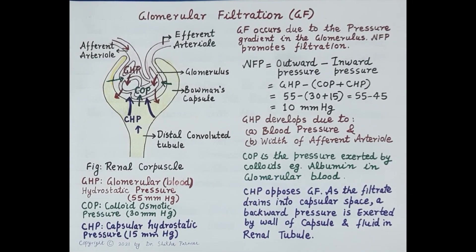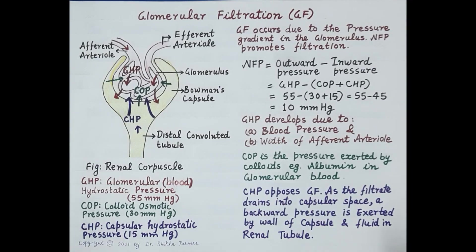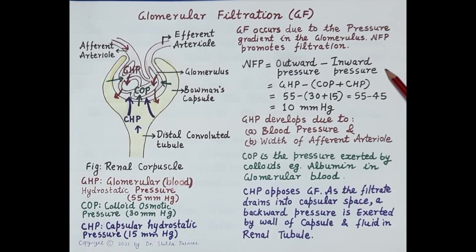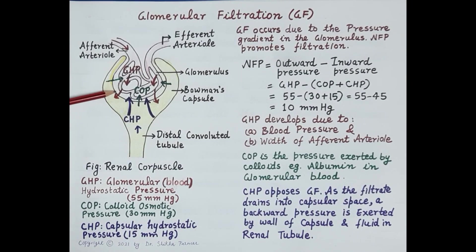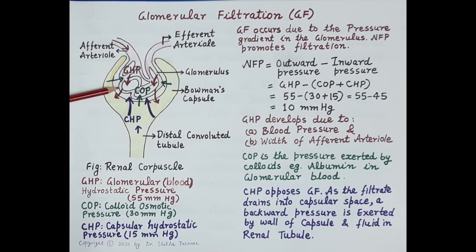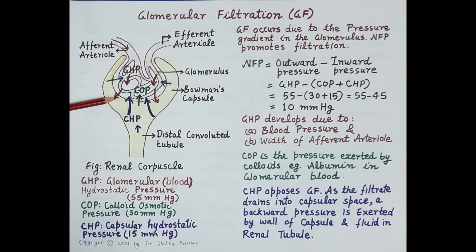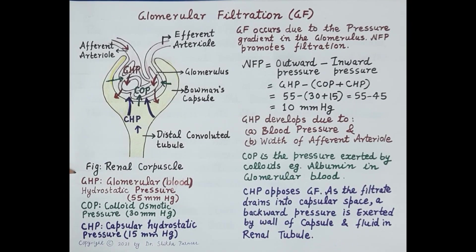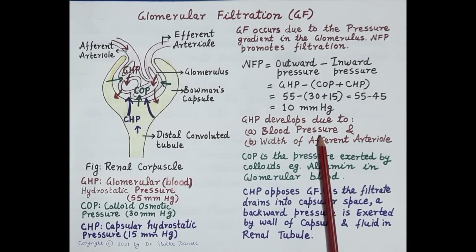Blood components that are not filtered are carried away from the glomerulus by the efferent arterioles. Glomerular filtration occurs due to a pressure gradient in the glomerulus. There are two types of pressure: outward pressure that supports filtration, and inward pressure that prevents filtration. The main driving force for glomerular filtration is the outward pressure, which pushes blood from the glomerulus into Bowman's capsule. This outward pressure is called glomerular hydrostatic pressure, and it depends upon the blood pressure as blood enters the glomerulus.